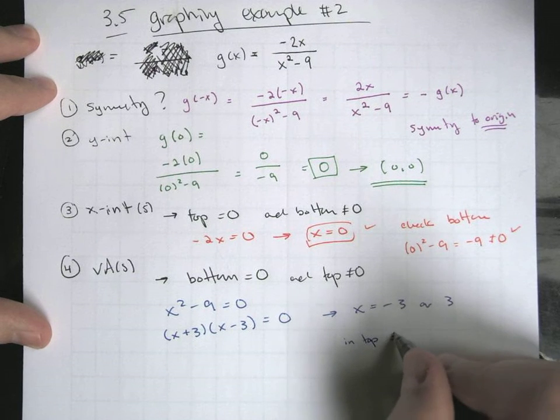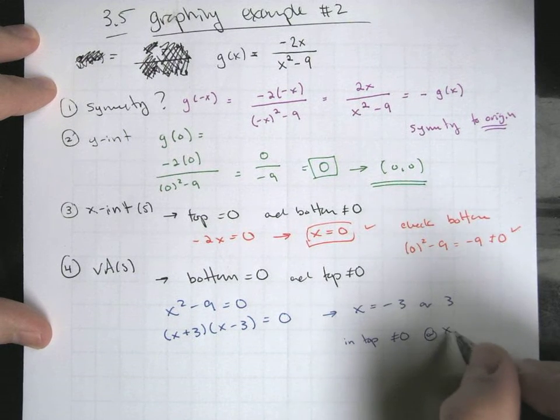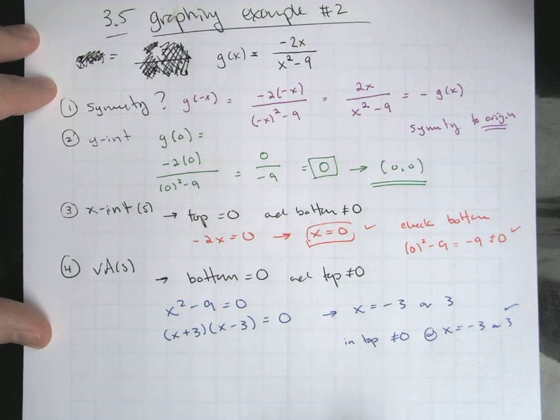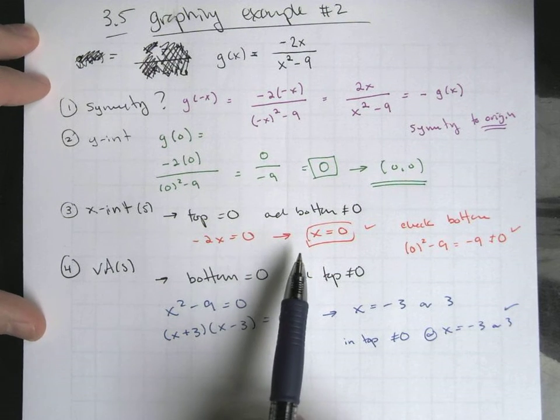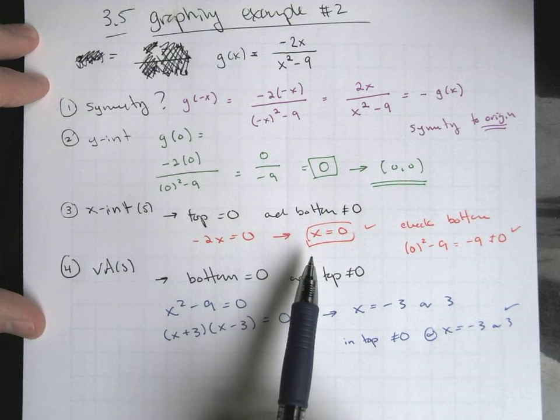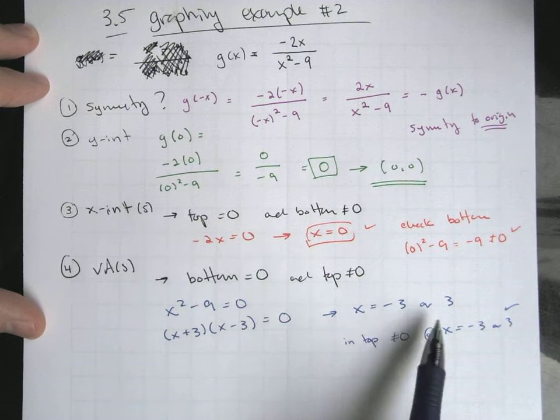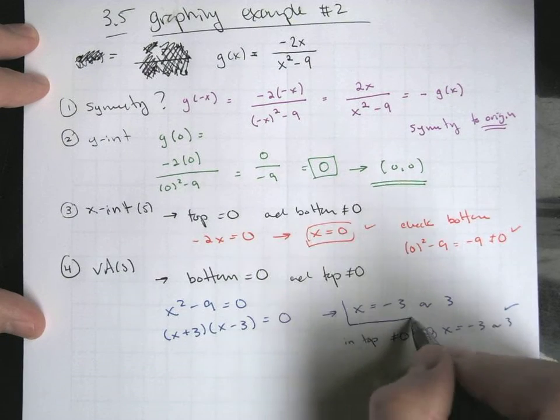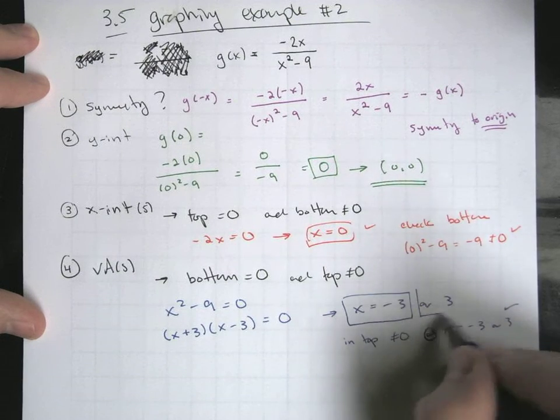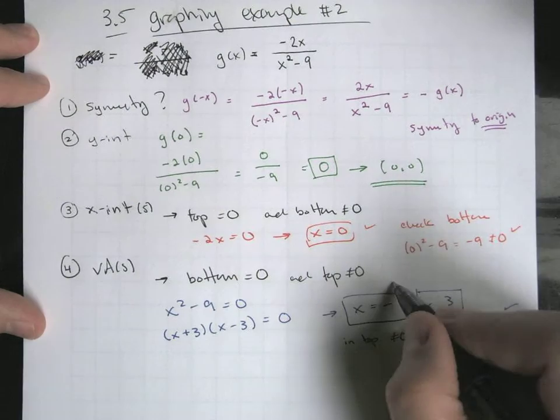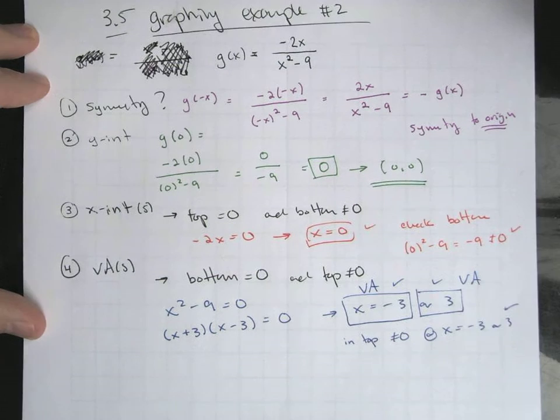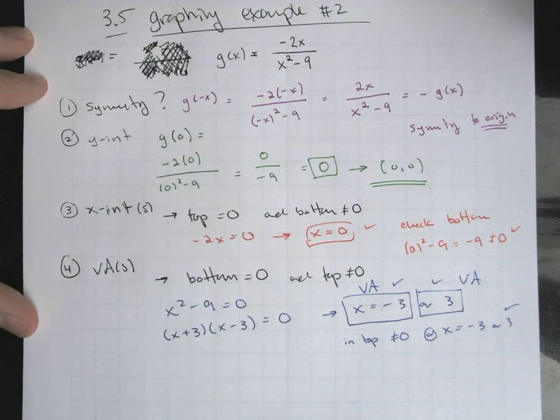In the top, we're not going to be zero at either of those. We kind of know that from the work we just did. We sort of found all the points where the top is going to be zero. So if these are different values than what we just saw in part three, then we're kind of good to go without necessarily having to do a full extra check. So both of those will be vertical asymptotes. They won't necessarily be the holes or the gaps in the function.